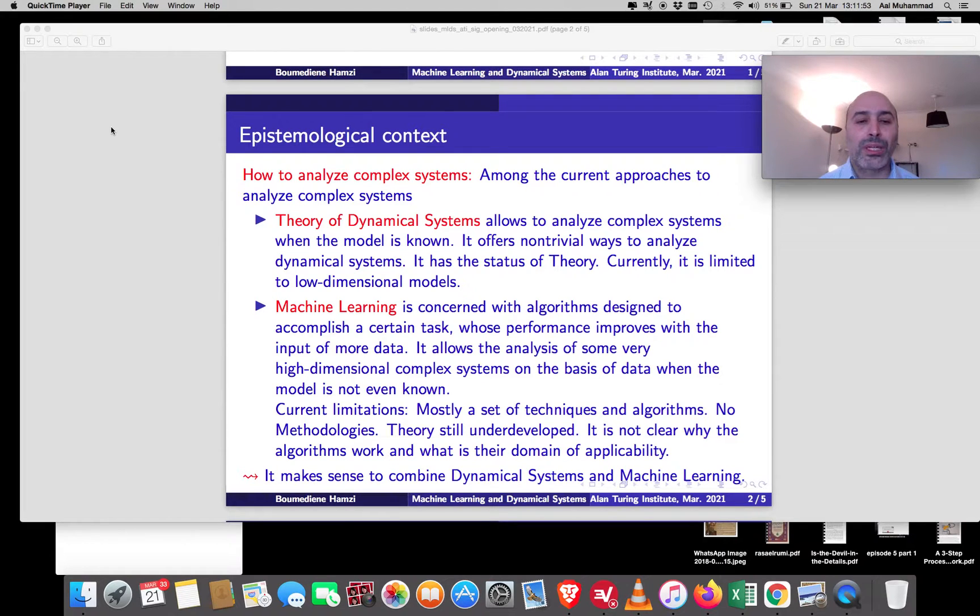As we know in epistemology and in philosophy of science in particular, there are two main schools, the one of rationalism and the one of empiricism and they have different ways of looking at the world around us. The theory of dynamical systems is essentially coming from rationalism and machine learning is coming from empiricism and most of modern science are based on combining between a little bit of empiricism and a little bit of rationalism like in mathematical physics.